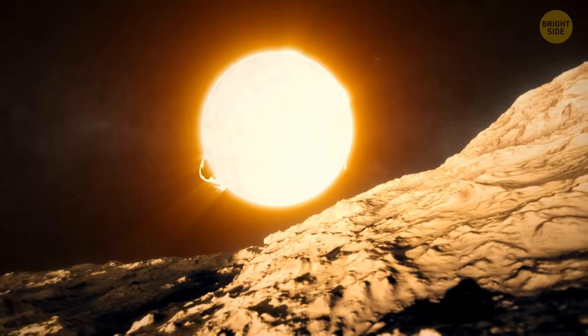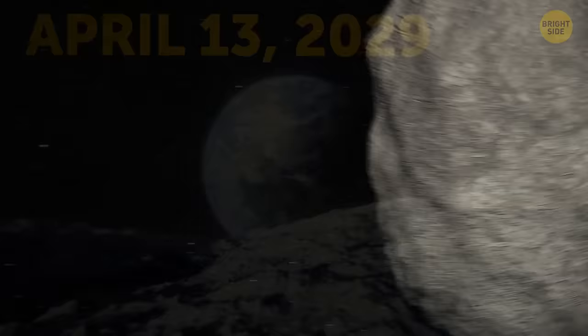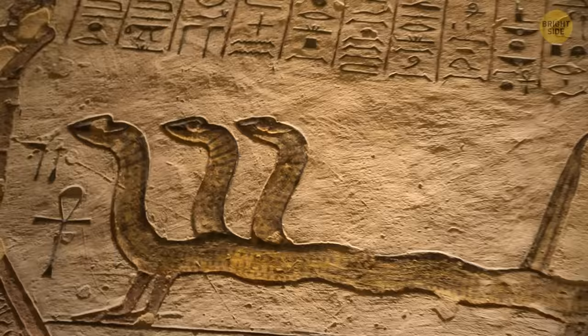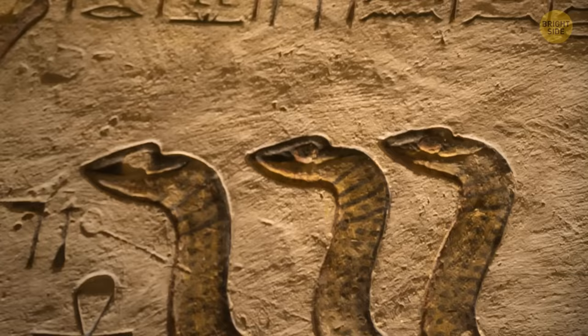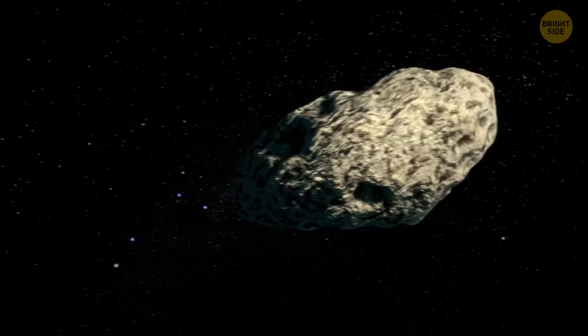On April 13, 2029, it will be just a few steps away from colliding with Earth. Even the name of this asteroid is quite frightening. Apophis is the name of the ancient Egyptian deity of chaos and destruction, a giant serpent that embodied chaos and was the opponent of Ra and light. But don't worry, scientists say that despite such alarming proximity, the asteroid won't actually hit us.